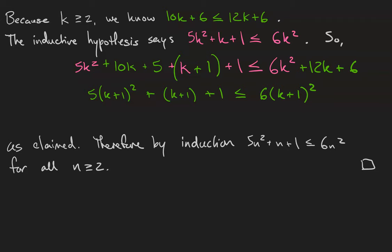Therefore, by induction, 5n squared plus n plus 1 is at most 6n squared for all n greater than or equal to 2.